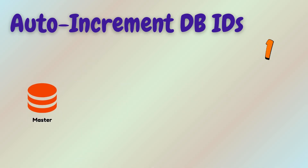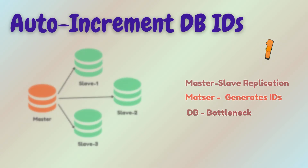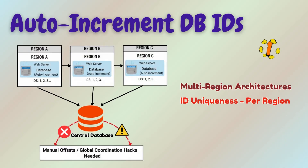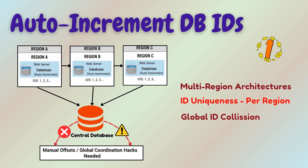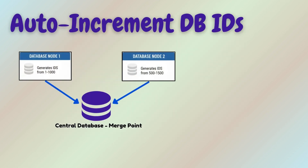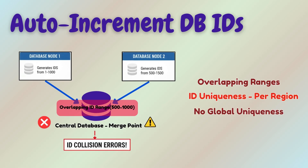If you use master-slave replication, only the master can generate IDs. Multi-region architectures are impossible or difficult to achieve without hacks. For example, consider this failure scenario: if two database nodes accidentally generate overlapping ID ranges, you get collisions.